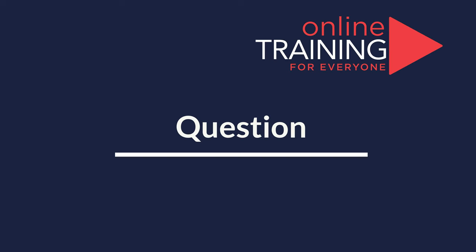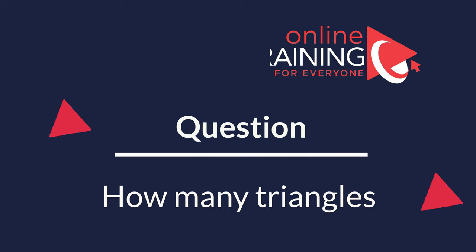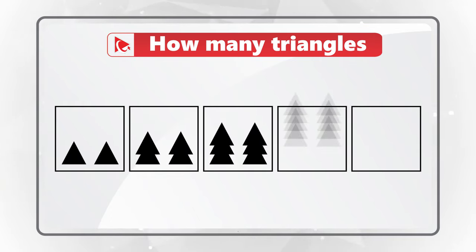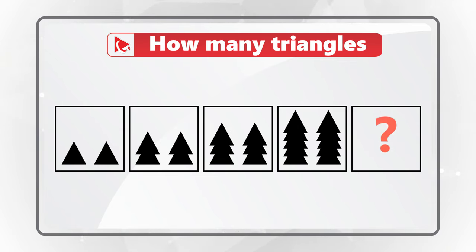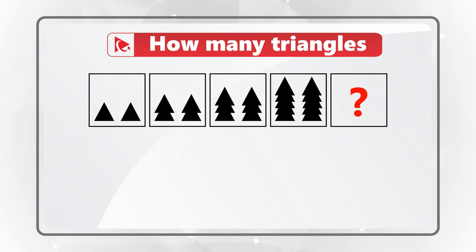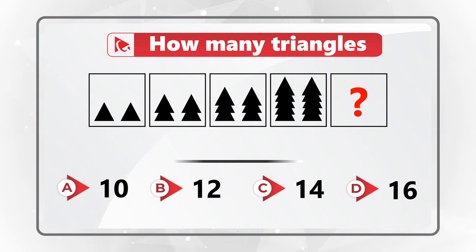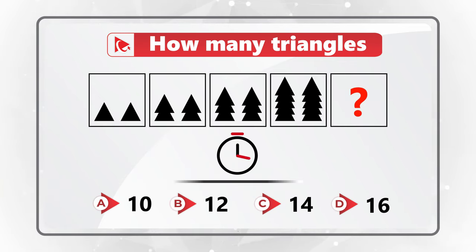Here is a cool question to test your analytical skills. You're presented with a sequence of squares — each box has triangles. The first box has 2 triangles, the second has 4, the next has 6, one after that has 10, and you need to determine the number of triangles in the box with the question mark. Choices are: A 10, B 12, C 14, and D 16.